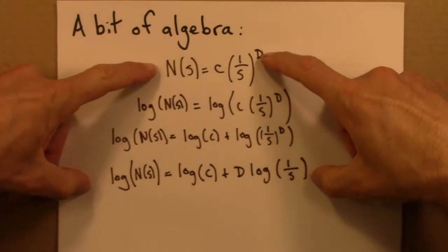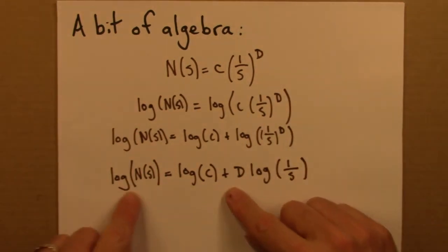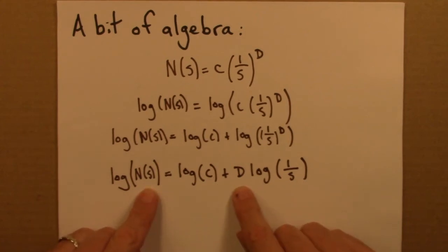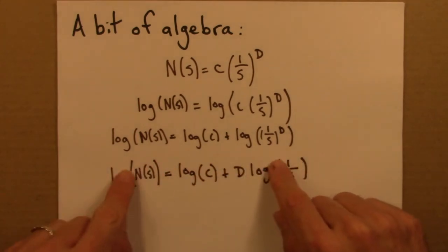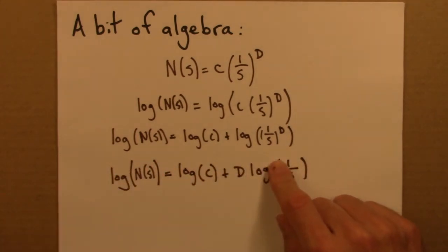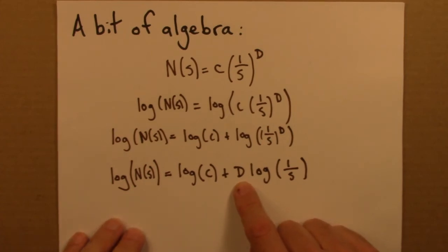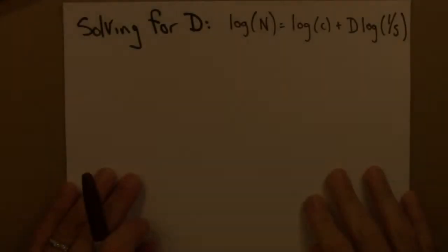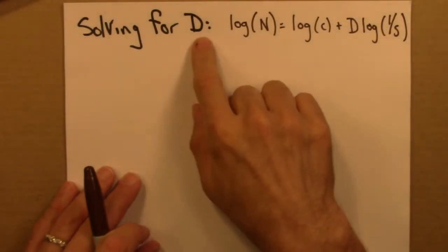So these two equations are the same — they're just written in different forms. They both relate N, C, D, and S. But this logarithmic form will be easier to work with because D is no longer in the exponent. Remember, D, the dimension, is what we're after here.